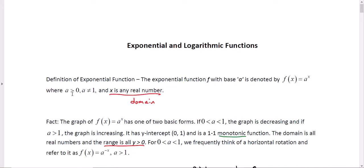Here a has to be positive but not equal to 1, and x could be any real number. So the domain of an exponential function is all real numbers. We don't have to exclude anything. There's no denominators, there's no radicals, none of that stuff that we've talked about before.